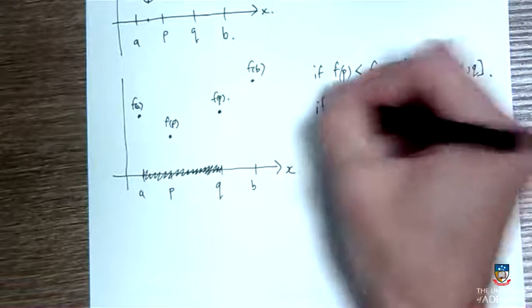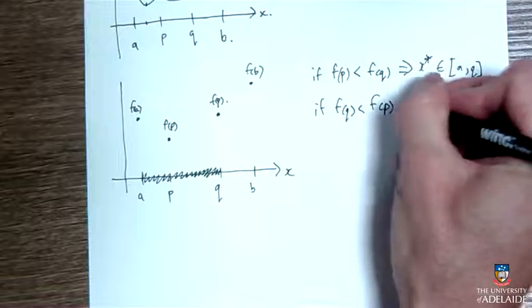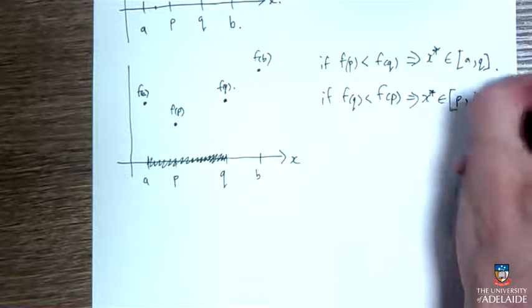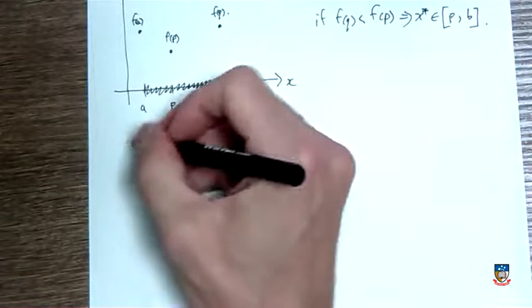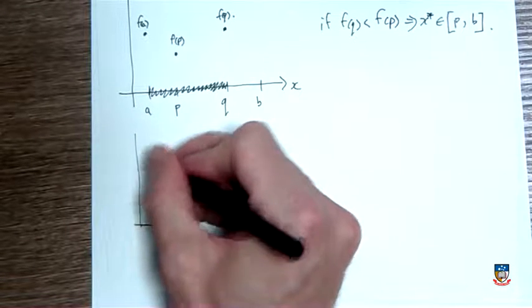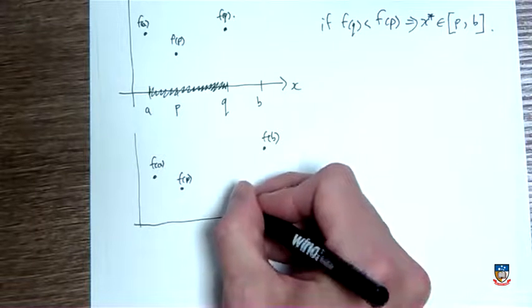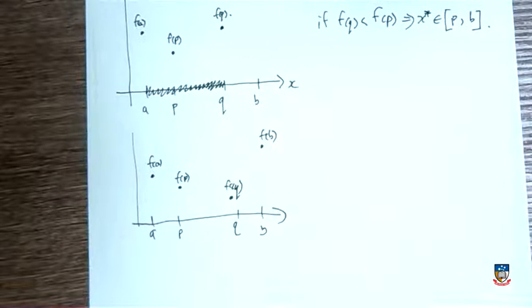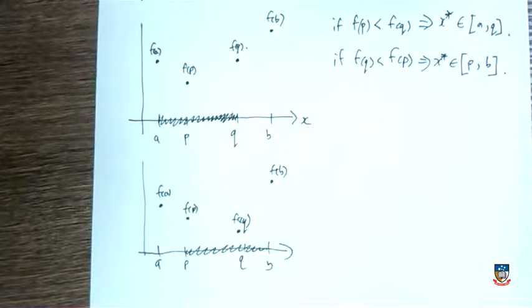And similarly, if this was the other way around, if f of q was less than f of p, then that would have told me the reverse thing. Then x star, the minimum here, would have been between p and b. So if I have that, maybe I'll draw that picture down here. f of a is there, f of b can be here, let's put f of p there, and let's say f of q is lower. And that tells me that now the minimum must be somewhere in that interval. I still don't know if it's between p and q or q and b, but I know it can't be between a and p.